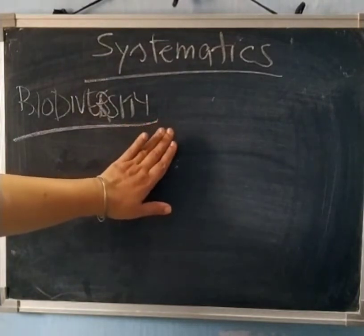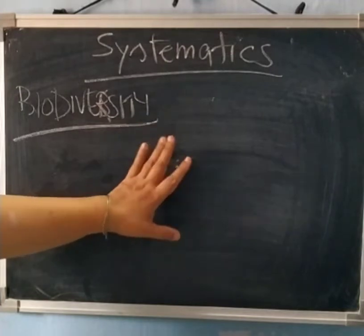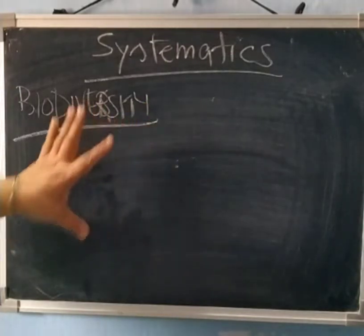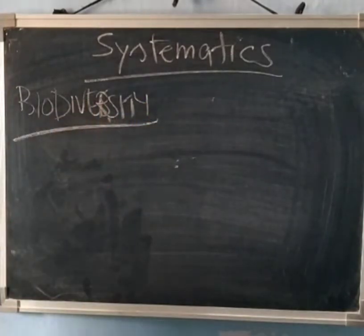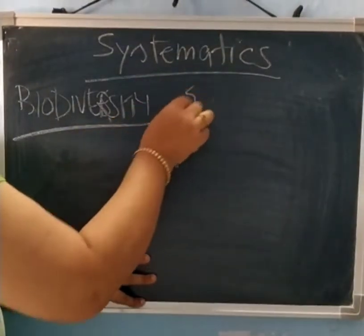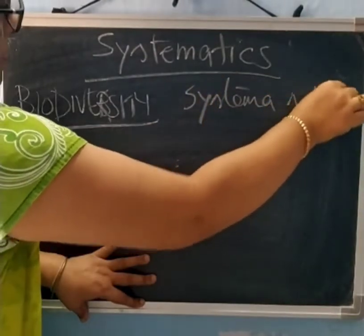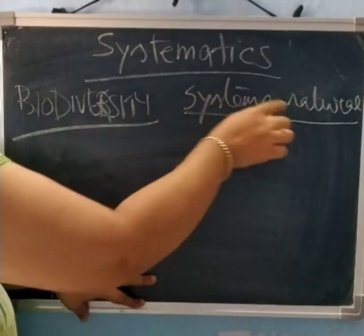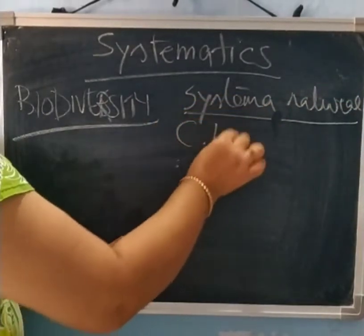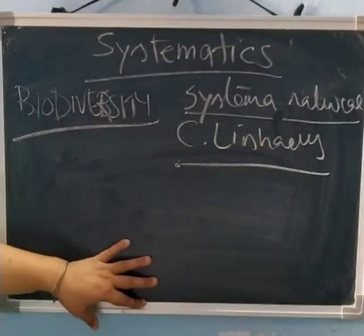This systematic word derived from Latin word, it is called systema, which means systematic arrangement of organism. And Linnaeus, Carolus Linnaeus, this is a scientist, and we say he is a taxonomist, and he actually coined this term systematics in 1751. And his book, Systema Naturae, here it is written about the systematics. So what is his book? Systema Naturae. And who is the scientist? Carolus Linnaeus.